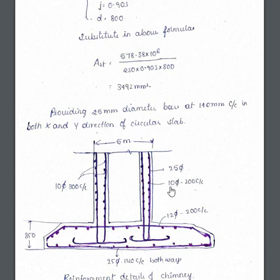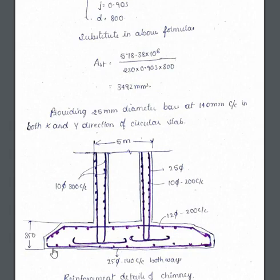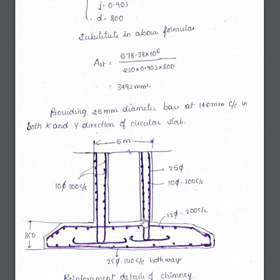The overall depth of the slab is 850 mm. The bottom reinforcement in both longitudinal and transverse directions is 25 mm diameter at 140 mm center to center in both ways. That completes the design of the chimney — this is the last part.